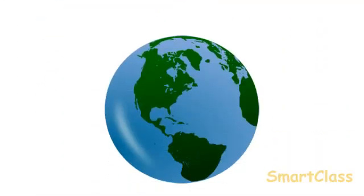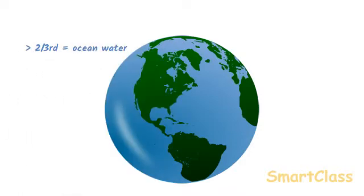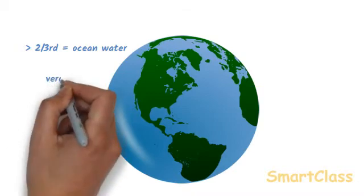Friends, more than two-thirds of the earth is covered with water. Most of this water is in oceans and seas. The largest source of water on the earth is oceans. Water in the oceans and seas has a large number of salts dissolved in it, due to which the ocean water is highly saline or salty.